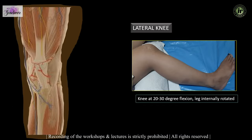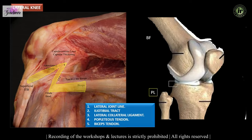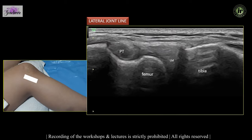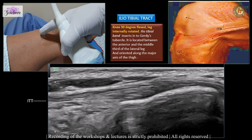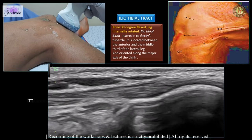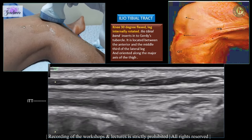After the medial knee we move to the lateral knee, examined at 20 to 30 degrees of flexion with the leg internally rotated. On the lateral side we are going to see the lateral joint line, iliotibial tract, lateral collateral ligament, biceps femoris tendon, and the popliteus tendon. Placing the probe on the anterolateral aspect of the knee in long axis, we can see the articular surfaces of the femur and tibia covered by articular cartilage, the superficial triangular portion of the lateral meniscus, and above this the popliteal fossa occupied by the popliteus tendon in cross-section. The iliotibial tract can be seen as a thin fibrous band lying between the anterior and middle third of the lateral leg, oriented along the major axis of the thigh.